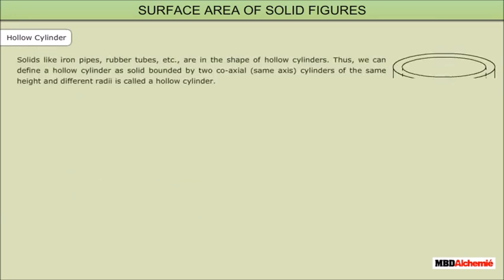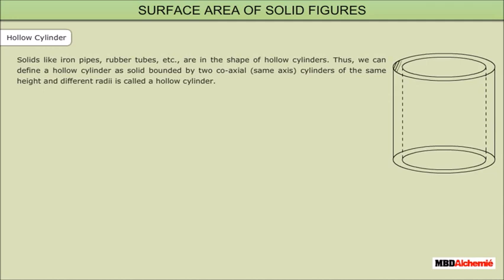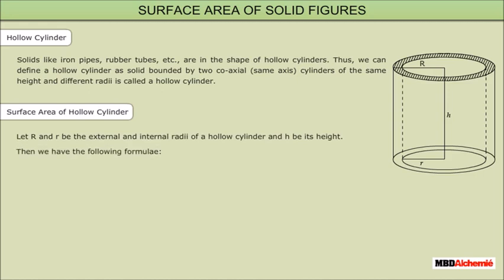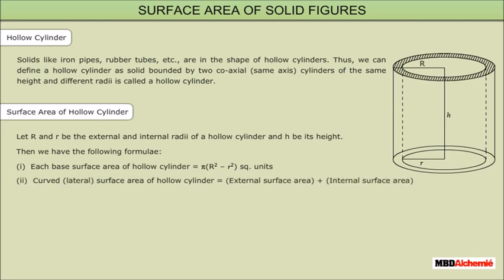Hollow cylinder: Solids like iron pipes, rubber tubes, etc. are in the shape of hollow cylinders. A hollow cylinder is a solid bounded by two coaxial cylinders of the same height and different radii. Let R and r be the external and internal radii of a hollow cylinder and h be its height. Each base surface area = π(R² − r²) square units. The curved lateral surface area = external surface area + internal surface area = 2πRh + 2πrh = 2πh(R + r) square units.